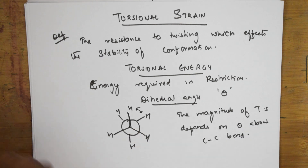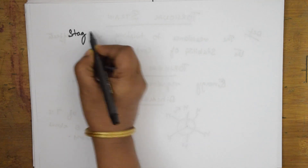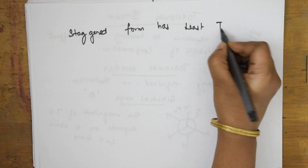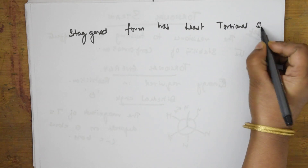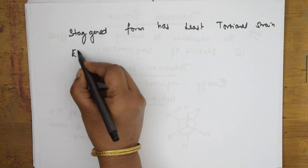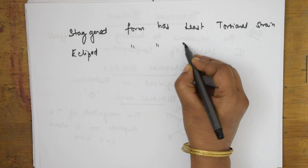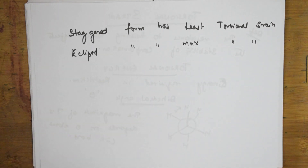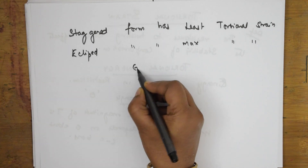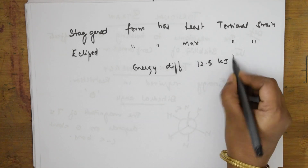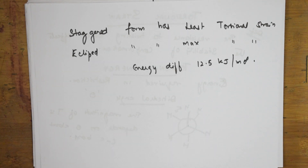Among staggered and eclipsed conformations, the staggered form has the least torsional strain because the repulsion is very minimum. The eclipsed form has maximum torsional strain because the atoms are very close, as shown in the previous video. The energy difference between both forms is 12.5 kilojoules per mole.